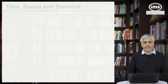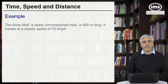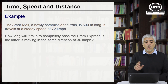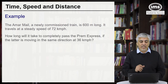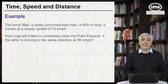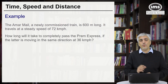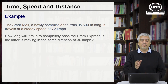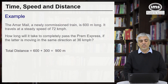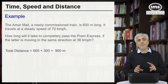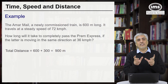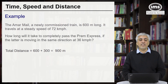Last example of this type: the Amarmail, 600 meters long, travelling at 72 km per hour. How long will it take to completely pass the Prem Express if the Prem Express is moving in the same direction at 36 km per hour? This is very similar to the car example where the car had to overtake the train. Here the Amarmail has to overtake the Prem Express. Relative speed matters, and both trains have length — 600 for the first and 300 for the second — giving a total distance of 900 meters.